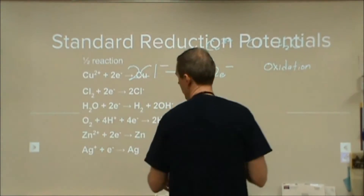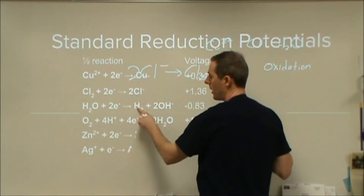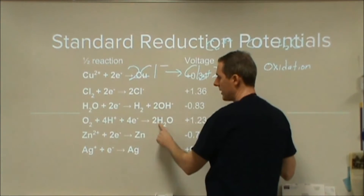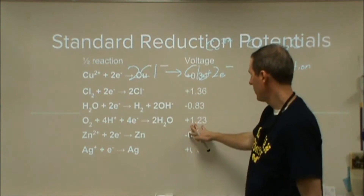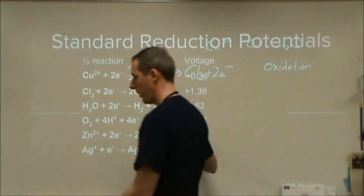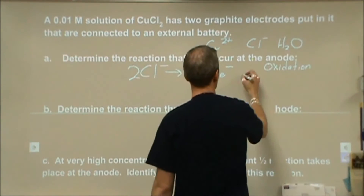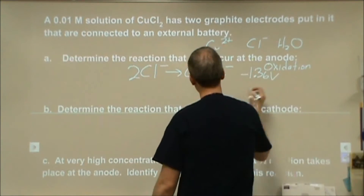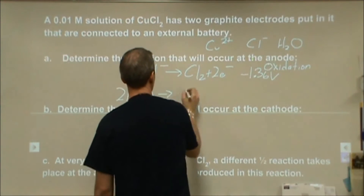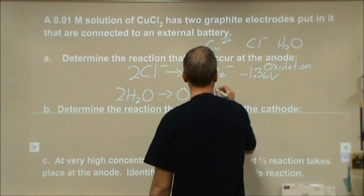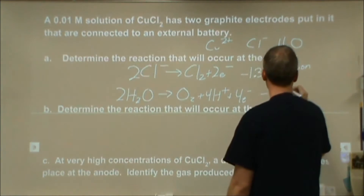The other reaction we can do is the oxidation of water. For water, we have the reduction here — water to hydrogen gas — so the oxidation is taking water and turning it into oxygen. The voltage on that, when reversed, is going to be negative 1.23 volts.